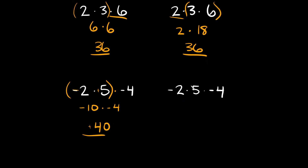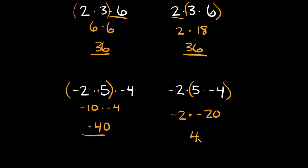Going to this other side, if I move the parentheses to the 5 times negative 4, well 5 times 4 is 20, and a positive times a negative is a negative. Then we'll bring down the negative 2 times part. So negative 2 times negative 20 — 2 times 20 is equal to 40, and a negative times a negative is a positive, so you get positive 40 on this side also.